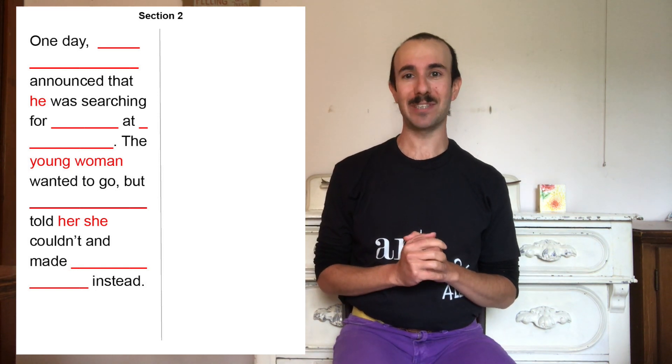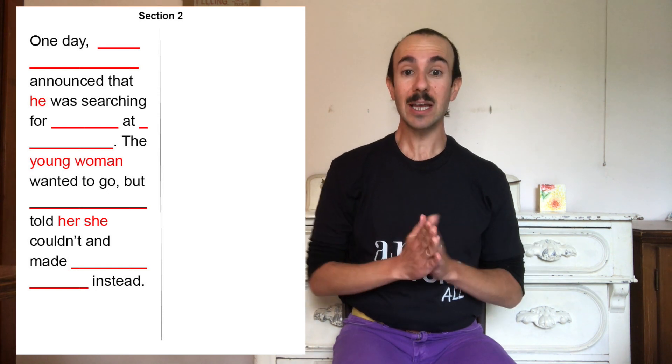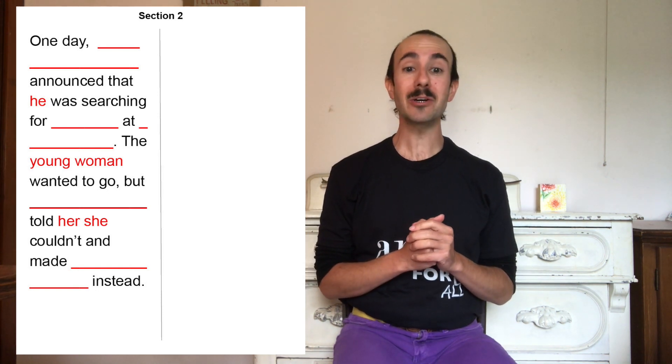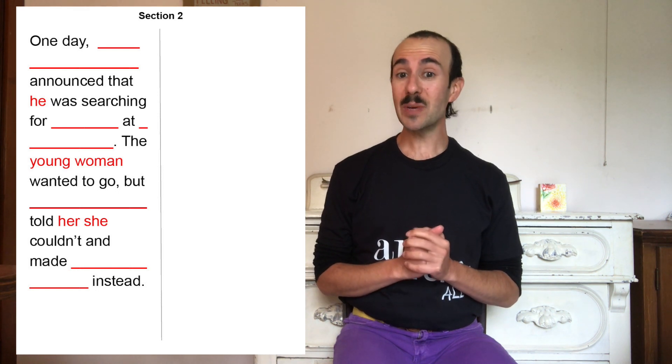One day, the great king announced that he was searching for a queen at a big event. The young woman wanted to go, but her stepmother told her she couldn't and made her work hard instead. First, we have to decide who our Cinderella will meet, and what is the happy ending they're going to have together. It could be romantic, with a prince or princess searching for a royal partner, like in many of the stories we've read. But it could also be that this new character is looking for a good friend, or maybe it's someone who gives our Cinder person a job or makes them famous. Our second graders decided that it would be Janet Jackson, and that she was searching for backup dancers.